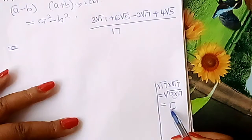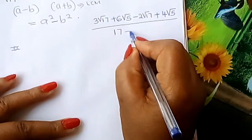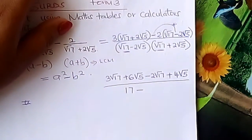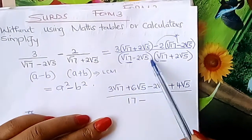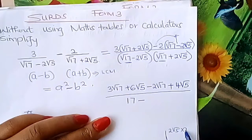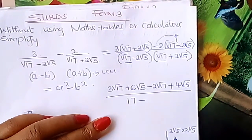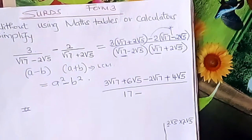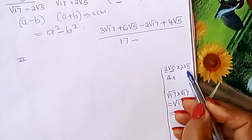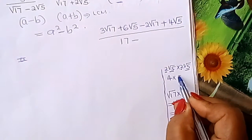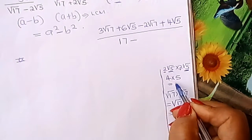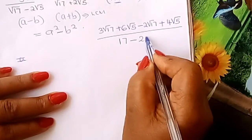Then you have 2 root 5. Look at this: 2 root 5 times 2 root 5 — take the whole numbers first: 2 times 2 is 4, then root 5 times root 5 is root 25 which is 5. So 4 times 5 gives you 20. Therefore in the denominator you write 20.